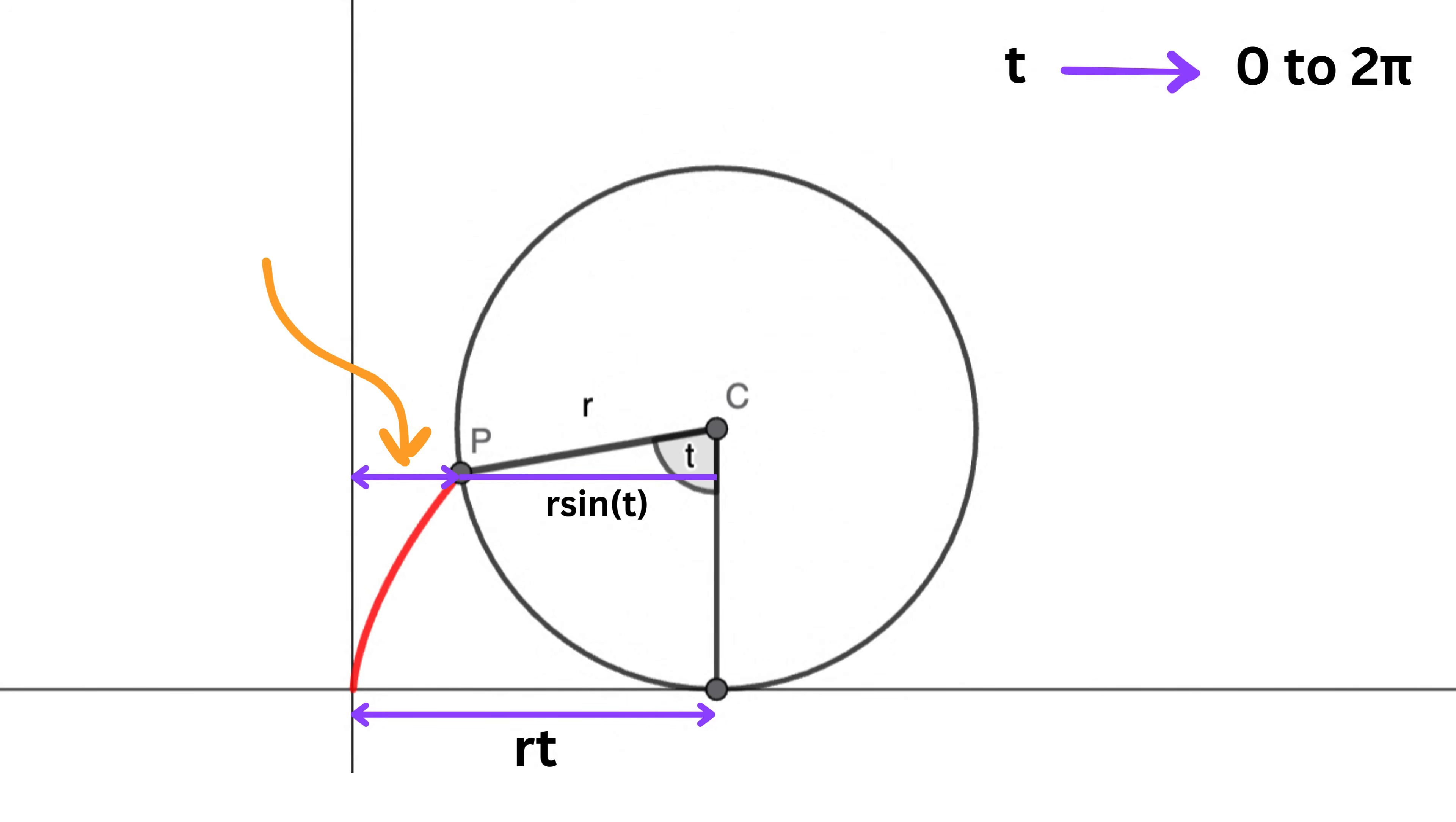Therefore, the length of this piece will be equal to R T minus R sine T, and thus the x-coordinate of point P will be equal to R T minus R sine T.